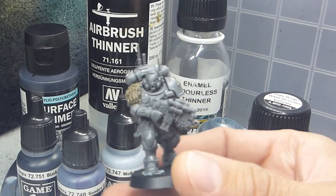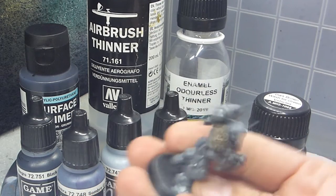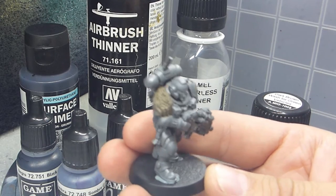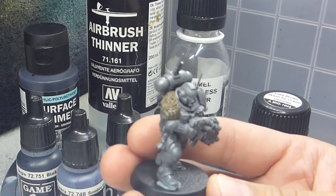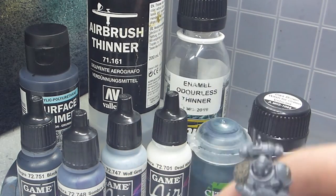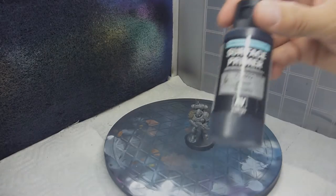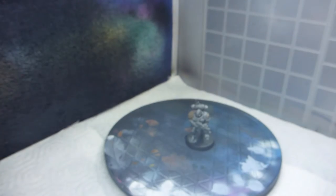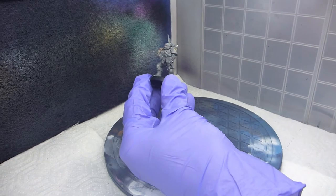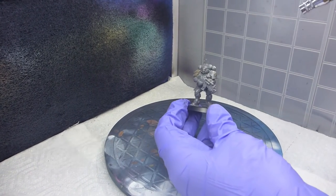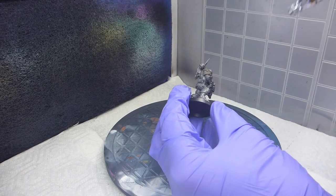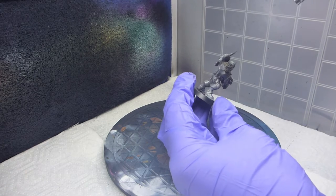This is the figure that we are going to paint today. It's an Aggressor. I've also sculpted a little wolf pelt on one of the shoulder pads and a Space Wolf emblem. The first thing we're going to do is prime the miniature black. I usually go over the miniatures like two times with the primer just to get good coverage.